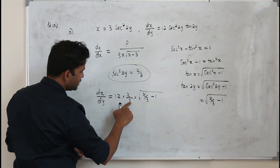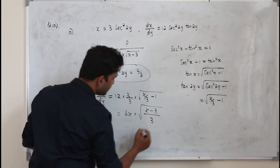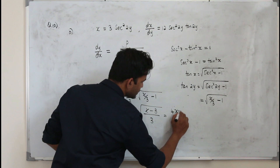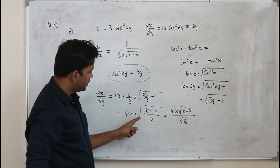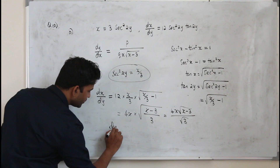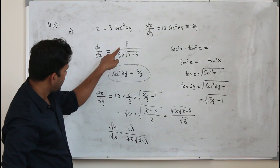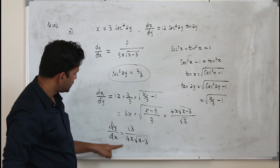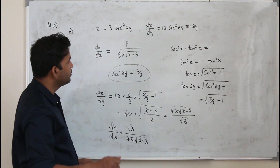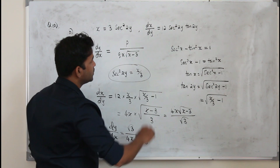Simplifying: 12 divided by 3 gives 4x. So dx/dy = 4x times √((x−3)/3), which can be written as 4x·√(x−3) over √3. Flipping both sides gives dy upon dx equals √3 over (4x·√(x−3)). This matches the required form where p equals √3, which is irrational, and q equals 4, which is an integer. You need the trigonometric identity and to convert tan(2y) using √(sec²(2y) − 1).